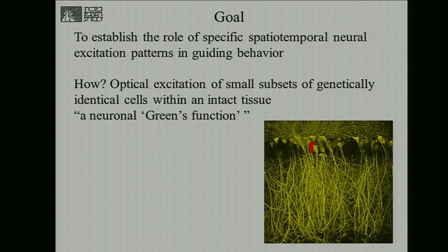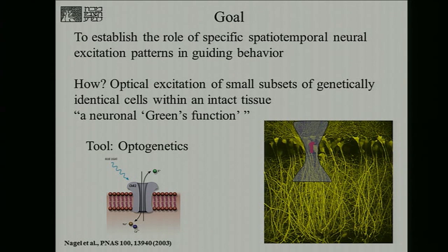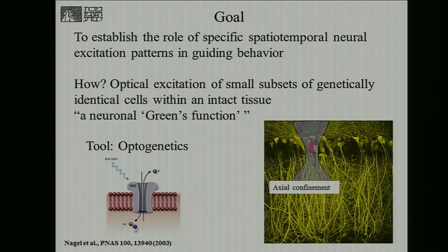Let's say we want to photoactivate this single neuron. We want to activate it using channelrhodopsin-2, which is usually activated by blue light. With blue light, you have two problems. The first is loss of axial confinement, because blue light is present both above and below the neuron you want to excite. The second is scattering — even if you focus your light down to a region covered by a single neuron, scattering inside the turbid tissue would broaden the response, photoactivating a wider region.